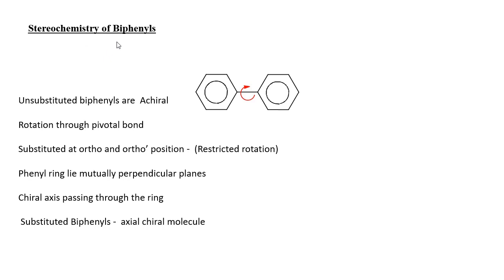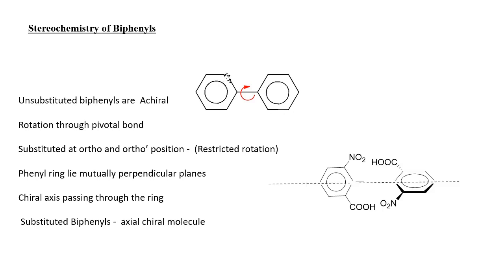Now let us discuss the stereochemistry of biphenyl. In a simple biphenyl molecule, two phenyl rings are joined by a pivotal carbon-carbon single bond. Each of the phenyl rings can rotate about this pivotal bond with respect to the other. But if we substitute the ortho and ortho-dash positions of these two phenyl rings with bulky groups, the free rotation becomes restricted, and the bulky groups will lie as far apart as possible, making each of the rings lie in a mutually perpendicular frame.